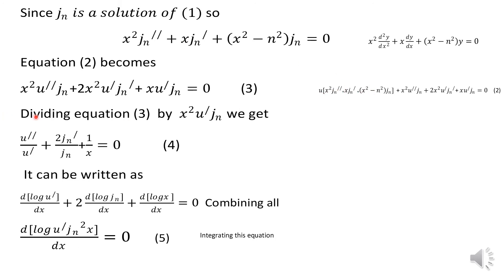Now dividing the remaining equation x²·u''·Jn + 2x²·u'·Jn' + x·u'·Jn = 0 by x²·u'·Jn, what we get is: u''/u' + 2Jn'/Jn + 1/x = 0. We are simply changing the form by dividing all terms.